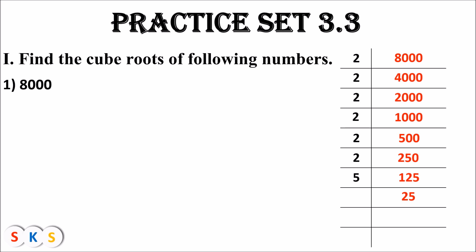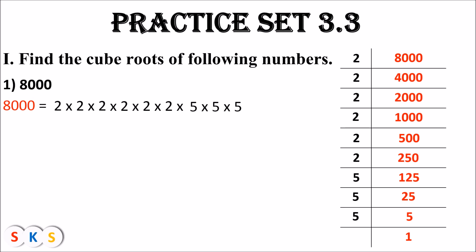Dividing 125 by 5 gives 25. Dividing 25 by 5 gives 5. Dividing 5 by 5 gives 1. So we have the prime factors of 8000. Therefore 8000 can be written as 2 × 2 × 2 × 2 × 2 × 2 × 5 × 5 × 5.